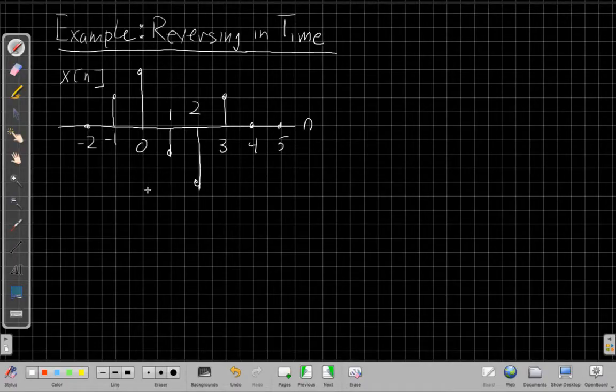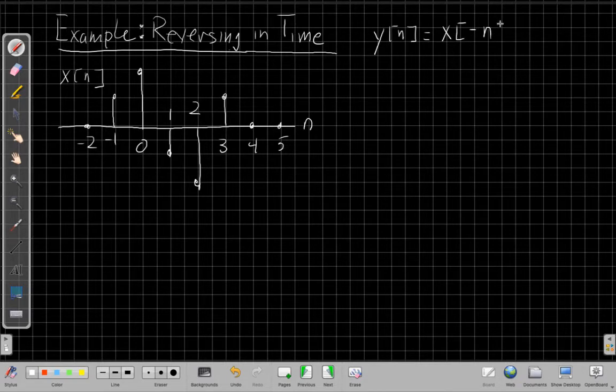So again, a signal that's reversed in time, the way this looks in the equation, you might say that the new signal y of n is equal to the original signal x of n, or x of minus n.